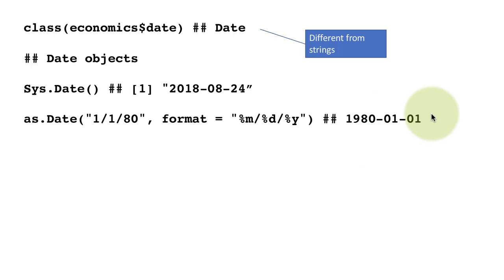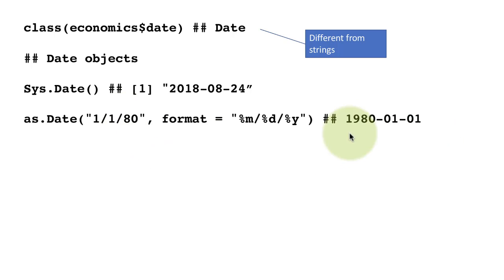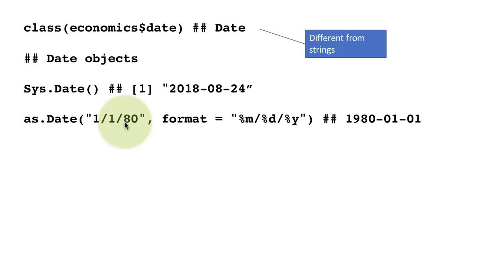The standard format in R for displaying dates is year-month-day with dashes in between. That's not how we gave the system the date, but that is how it internally displays any date object. Note that we used a slash in the format string because our original string contains slashes. If the original string had contained something else, we could put those characters in the format string and the system will convert it appropriately.